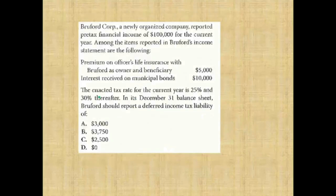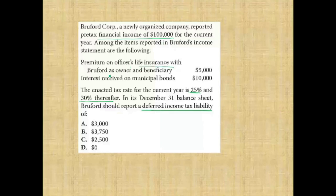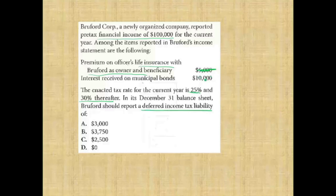A lot of data — read the question first. The enacted tax rate for the current year is 25% and 30% thereafter. On December 31 balance sheet, what should they report as deferred income tax liability? B Corporation reports pre-tax financial income of $100,000. Among items reported: premium on life insurance with B as owner — permanent difference — and interest received on municipal bonds — permanent difference. There is no deferred component because both items are permanent. The deferred tax liability is zero.